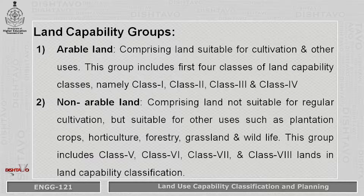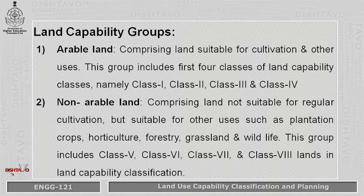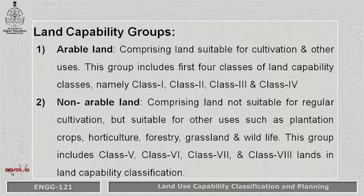The land capability groups — there are two groups: arable land and non-arable land. Arable land means cultivable land; non-arable means it is not suitable for normal cultivation. Arable land comprises land suitable for cultivation and other uses, and includes the first four classes — class 1, class 2, class 3, and class 4. Non-arable land is not suitable for regular cultivation, but suitable for other uses like plantation crops, horticultural crops, forestry, wildlife, etc. This land includes classes 5, 6, 7, and 8.